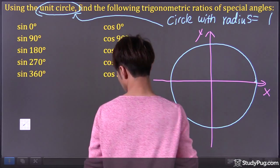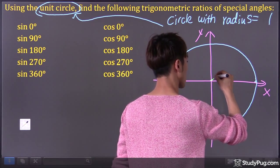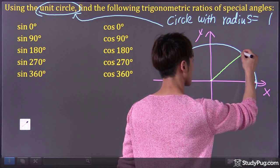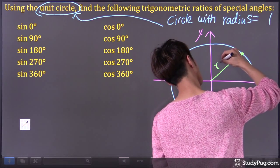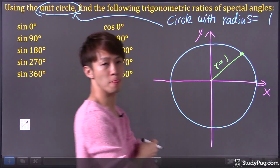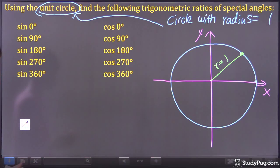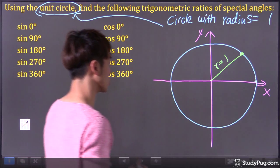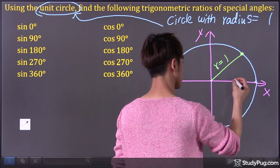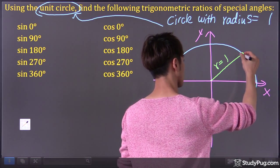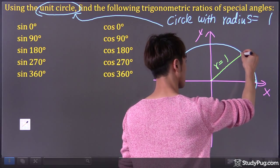So basically, it's a circle with radius. If I draw a radius right here, the radius equals 1. Now from here, I'm going to draw a triangle.